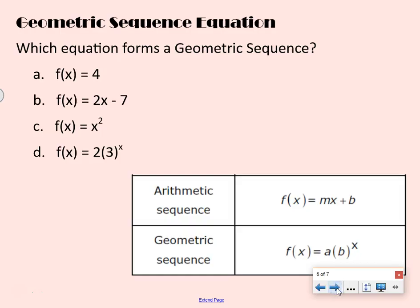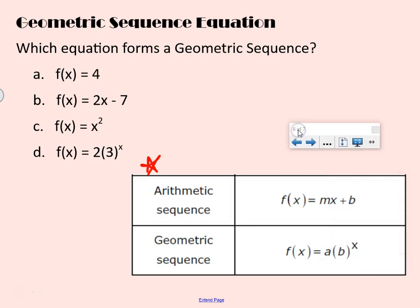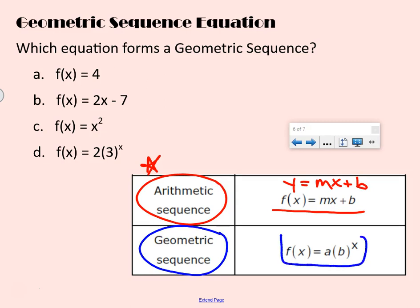So a geometric sequence equation, we want to know which equation forms the geometric sequence. Now here, I have pictured what you're going to get on your MCA formula sheet. Now arithmetic sequence is linear, so y equals mx plus b. However, a geometric sequence looks a little bit different. We call this an exponential equation. And the one key thing is that x is a power. So x is your exponent or your power.